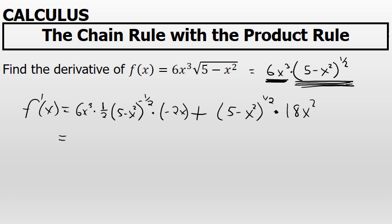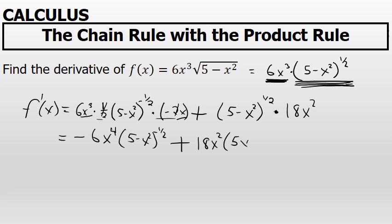Multiplying 6 times x to the third times one-half times negative 2x gives negative 6x to the fourth times the quantity of 5 minus x squared to the negative one-half. Then for the second term, we write 18x squared times 5 minus x squared to the one-half power.